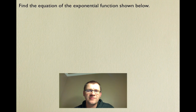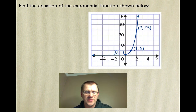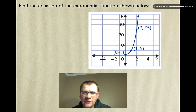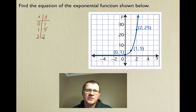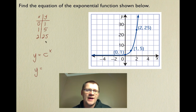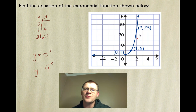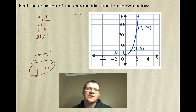Here's an example: find the equation of the exponential function shown. The graph goes through the points (0, 1), (1, 5), and (2, 25). One way to figure out the equation is to build a small table of values from those points. We know y equals something to the power of x. Looking at the numbers, that something has to be 5, because 5 to the power of 1 is 5, and 5 to the power of 2 is 25. So the equation is y = 5^x.